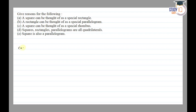Part a: A square can be thought of as a special rectangle. A rectangle has all interior angles of 90 degrees and opposite sides equal. In a square, all angles are 90 degrees and all sides are equal. So a square is a special rectangle in which all sides are also equal.